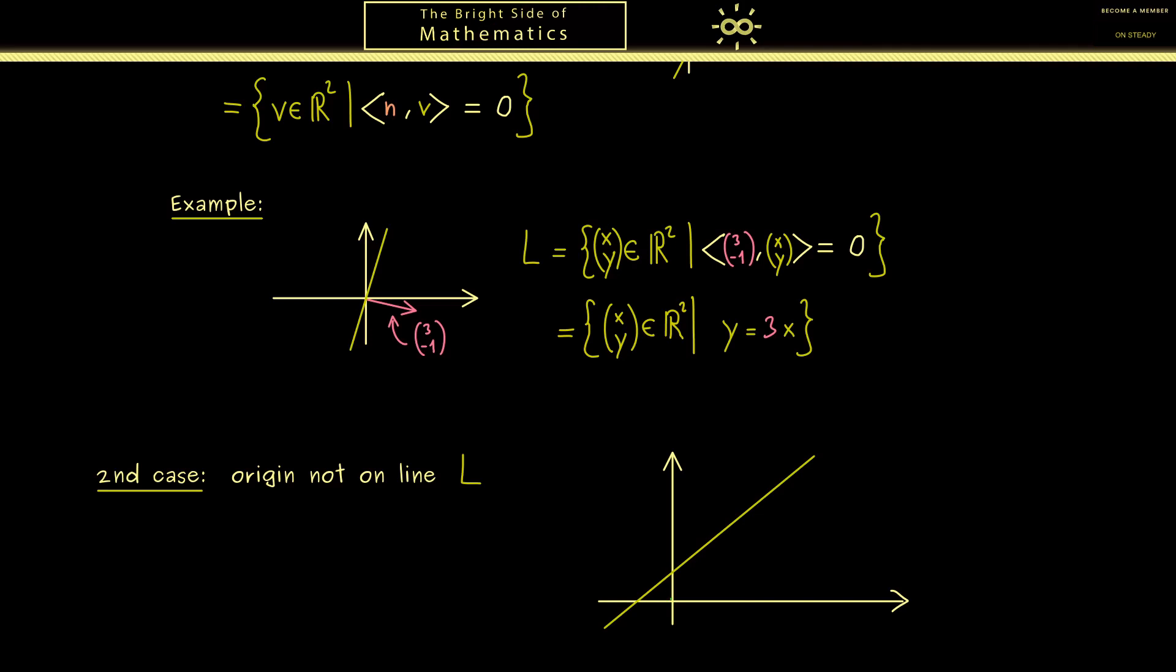So here we have the plane again and maybe one line here. And now you could say this line is translated from the origin to this point here. Then this translation is given by a vector P. This shouldn't be a problem for us because we know the vector addition.